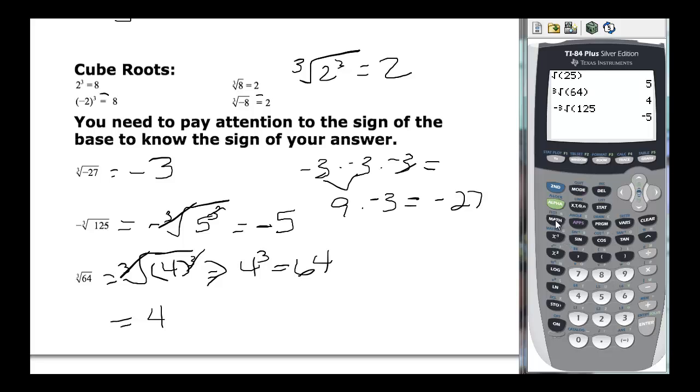And then finally, the cube root, go back to math, number 4. And we want to put in our negative 27, close the parenthesis, and we find out that we get negative 3. So you could do this with a calculator, but if we want you to show work, you would want to show that you are taking the cube root of something cubed, or the square root of something squared.